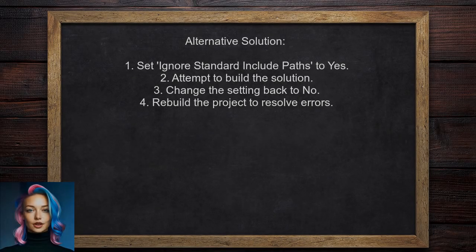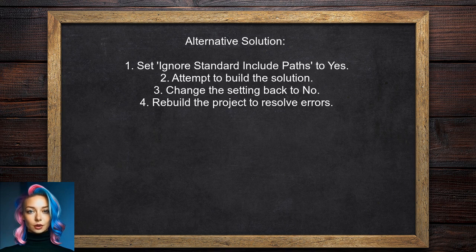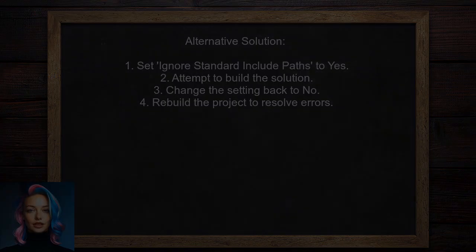Another user who faced a similar issue after updating Visual Studio 2017 resolved it by changing the setting for Ignore Standard Include Paths to Yes. After attempting to build the solution and encountering multiple errors, they switched the setting back to No. Upon rebuilding, the errors disappeared.